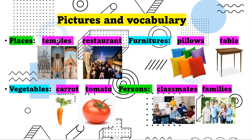Next for vegetables, we have carrot. Carrot is a singular noun. This is a vegetable that is orange in color. This is also the food of rabbits — rabbits like to eat carrots.